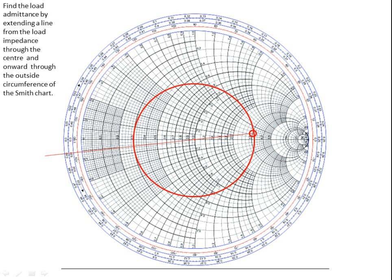Because we are using a shorted stub, we draw a line from the point where we identify the load through the center of the Smith chart and on through to the other side, passing through the impedance circle. Philip Smith, when he designed this, accommodated for placing the Smith chart in admittance mode, which is great for when you are using shorted stubs. Where the line goes through the impedance circle, that's where the load admittance is located. We've also placed the line to the outside of the Smith chart, which now serves as a reference for the load.